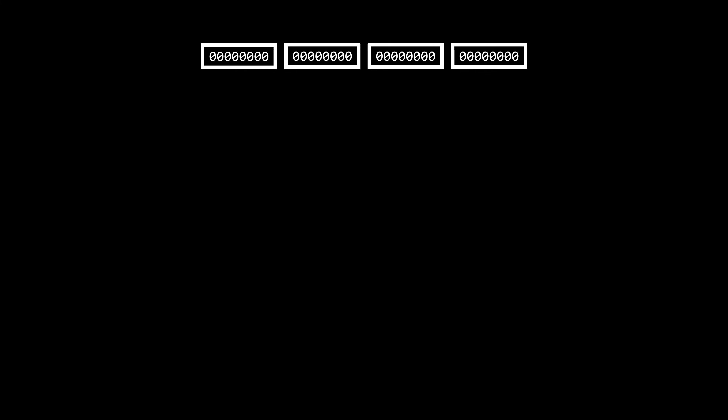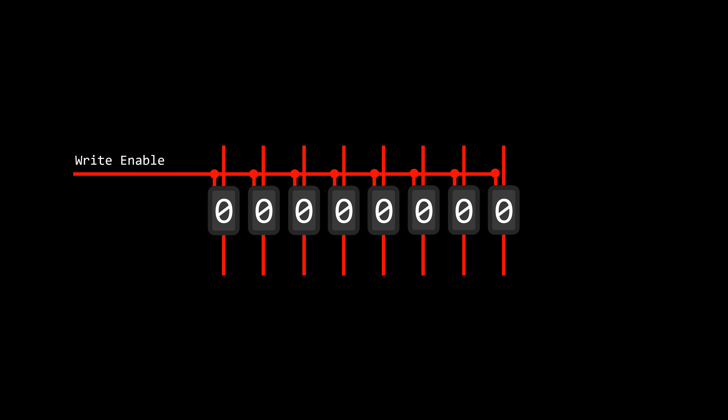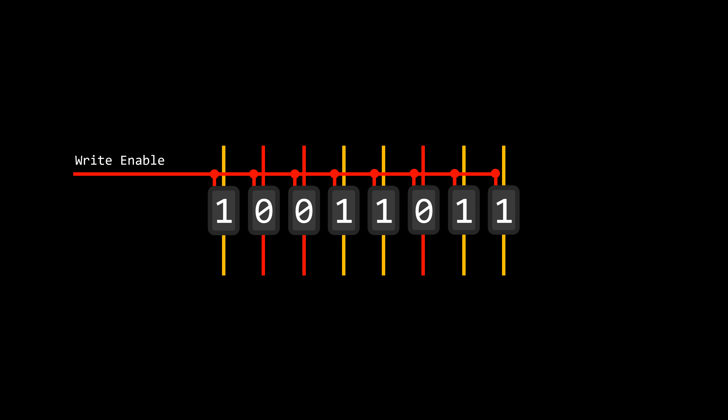Previously, we learned about registers. A register is a set of tiny memory cells called latches, made out of logic gates and interconnected in a way that retains information. Each latch has its own output wire for reading. Registers also have input wires and a write-enable wire. When write-enable is off, stored values don't change. Activating write-enable is the only way to overwrite values; once set, inputs can be deactivated and the new values remain stored.